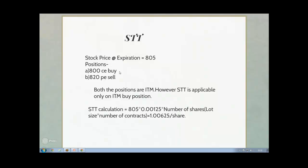What is the rate at which your STT will be applicable? It is 12,500 rupees per crore. So how will you calculate it? Take the stock price at expiration — that is 805 — multiplied by 0.000125, which is 12,500 per crore, and then multiplied by the number of shares.